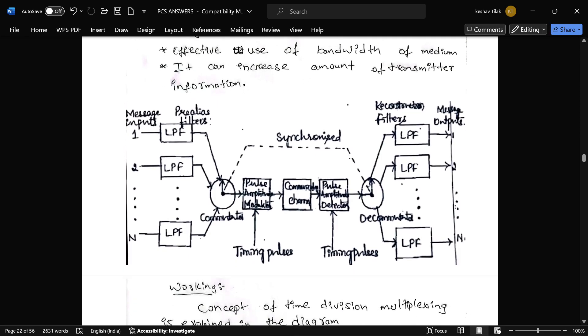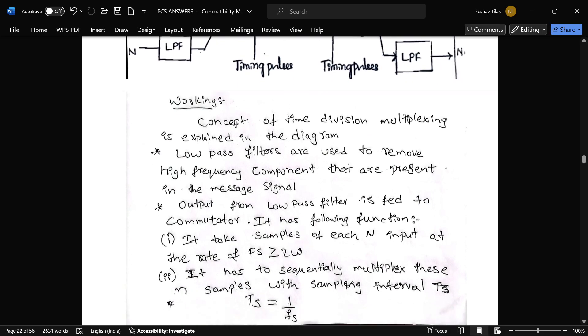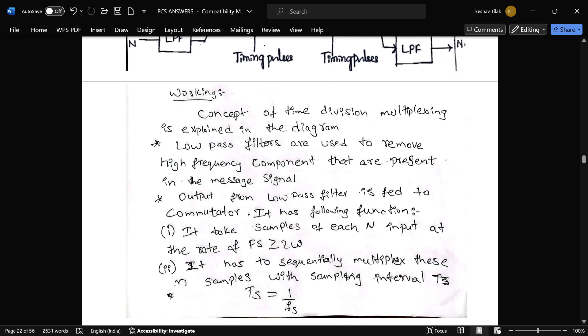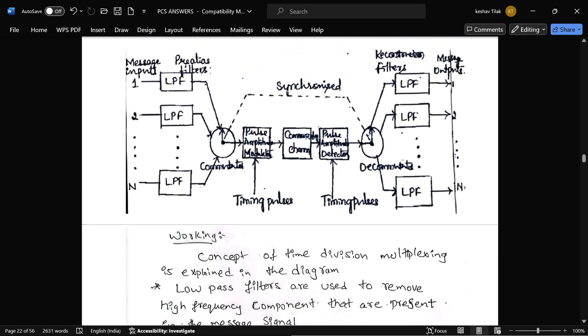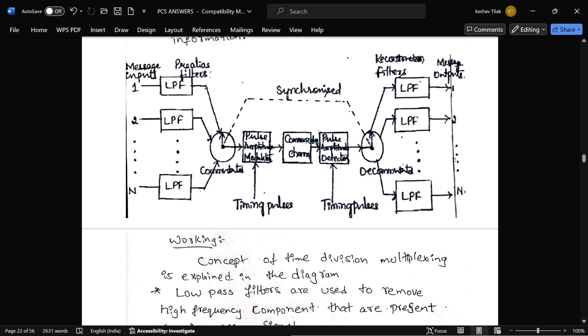And as you can see here N number of message signals are there and it is given to the low pass filter to remove the high frequency from the message signal. This low pass filter is also called as pre-aliasing filter. And this is transmitted to commutator and commutator have certain functions that is it take samples of each N input at the rate of Fs is greater than or equal to 2 omega. And it has sequentially multiplex these N samples with sampling interval of S is equal to 1 by Fs.